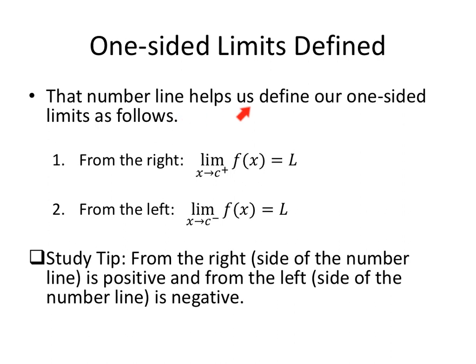So that number line helps us define our one-sided limits as follows. From the right, we use a little superscript plus. As X approaches C with a superscript of plus means from the right, because on a number line, the positive numbers are on the right of f of X equals L. And from the left, we'll use a little superscript of a negative, saying from the left, from the negative side of the number line. From the right is positive and from the left is negative.